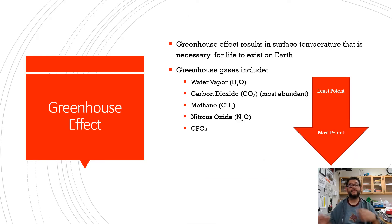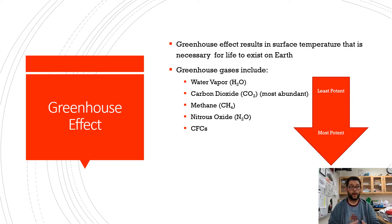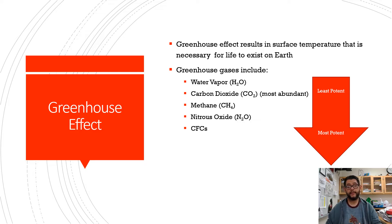When we're looking at the greenhouse effect, this is basically going to be something that is pretty clear. There are several gases to think about, and this results in the earth being warm enough for life to survive. There are several gases such as water vapor, carbon dioxide, methane, nitrous oxide, and CFCs. The most potent are going to be the CFCs and nitrous oxide, and then your water vapor and your CO2 are going to be the least potent.